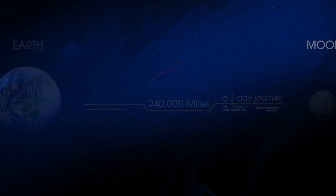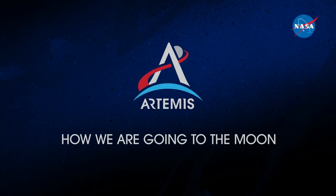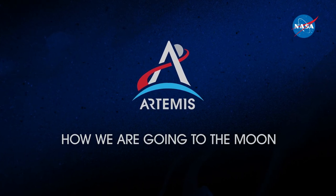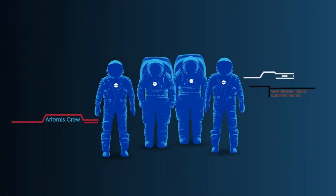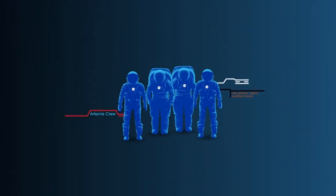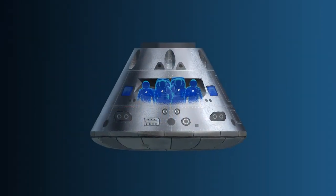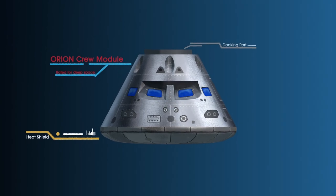So, what will an Artemis mission look like? Everything is designed and tested with our most important element in mind, the astronauts. This is their deep-space, human-rated spacecraft called Orion, built in three parts.